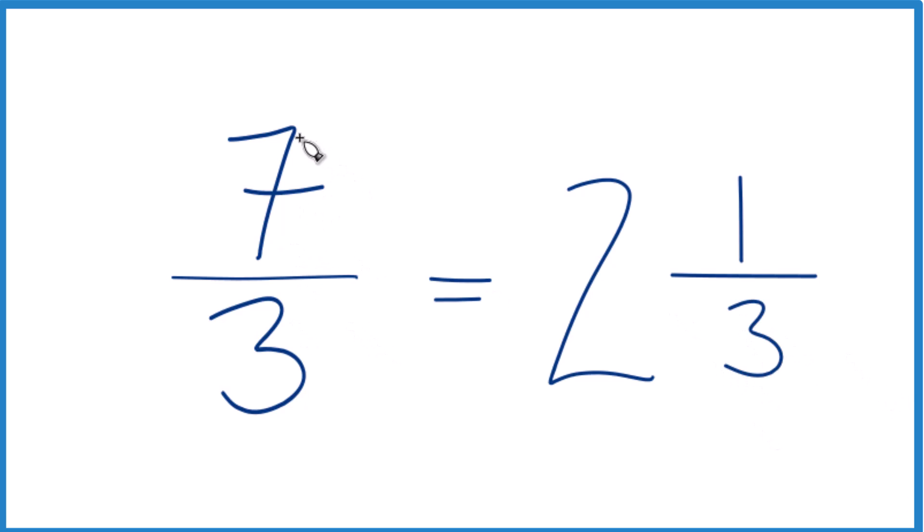So the improper fraction 7 thirds, that equals the mixed number 2 and 1 third. And this is in simplest form. We can't reduce this any further.